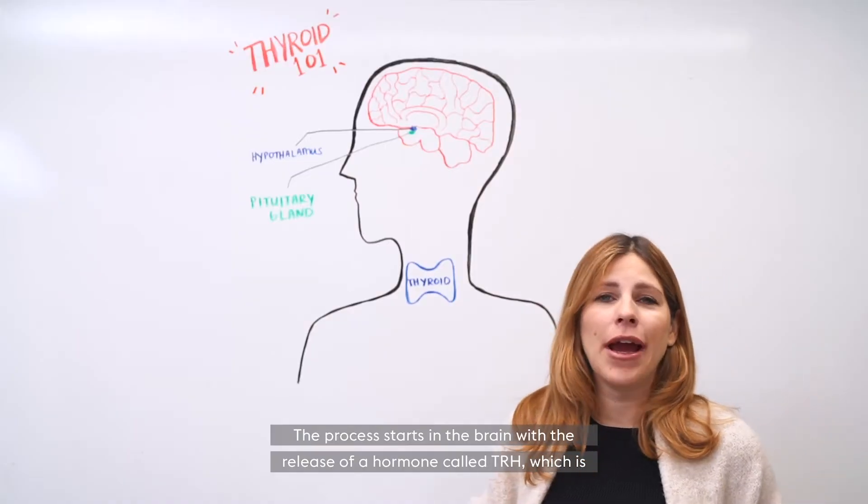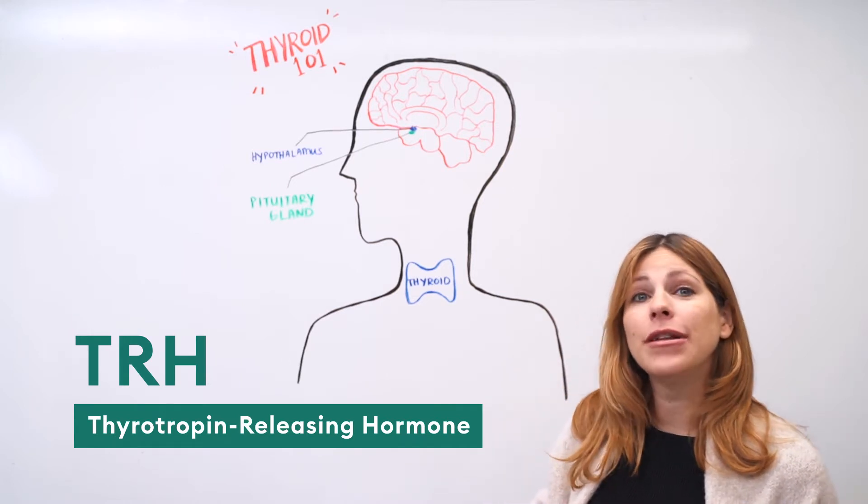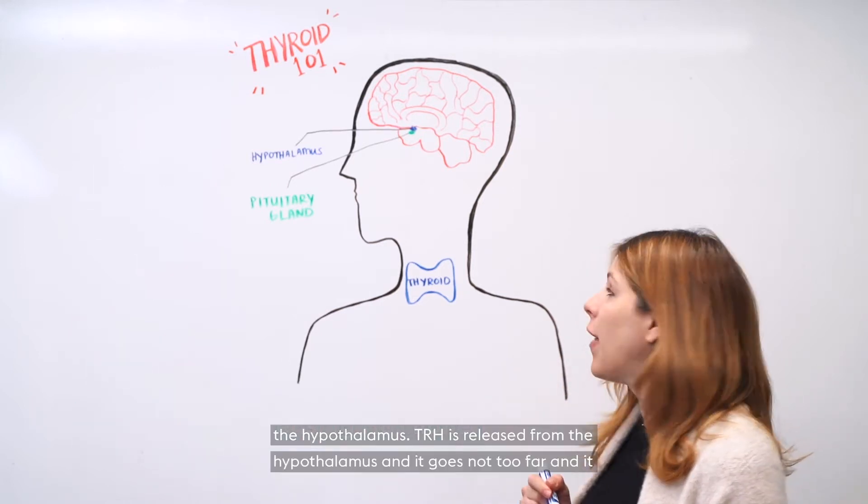The process starts in the brain with the release of a hormone called TRH, which is thyrotropin-releasing hormone, and it's released by a gland of the brain called the hypothalamus.